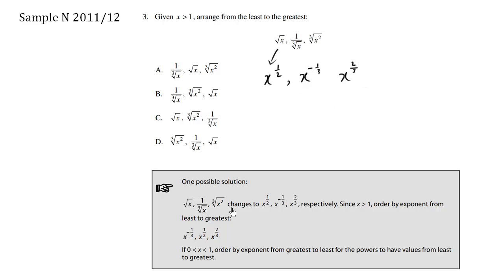So one possible solution is to rewrite it as a fractional exponent, and then to use our intuition that the greater the exponent, as long as x is greater than 1, it means that the result is going to be a bigger number. So here, we're going to arrange the smallest exponent, this negative 1 third, x to the 1 half, and finally x to the 2 thirds.